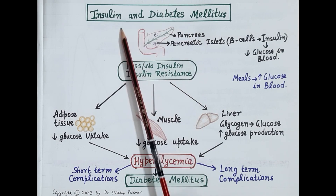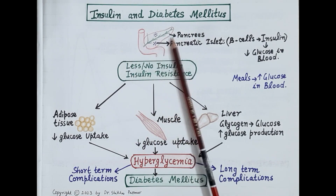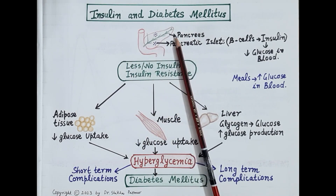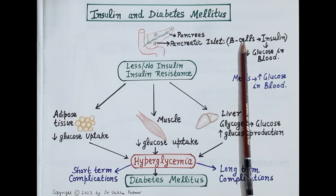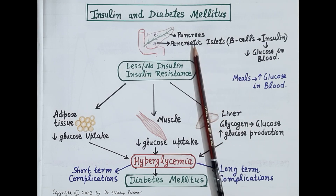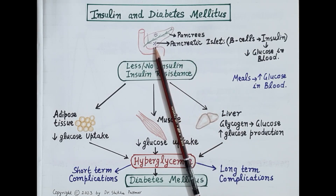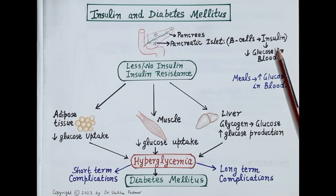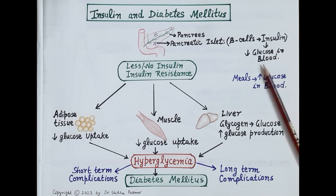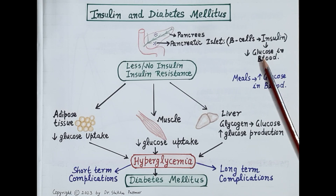So now look at this chart. This is the structure of pancreas. Beta cells of pancreatic islets in the pancreas secrete insulin. Insulin is a peptide hormone and it is released in the blood.